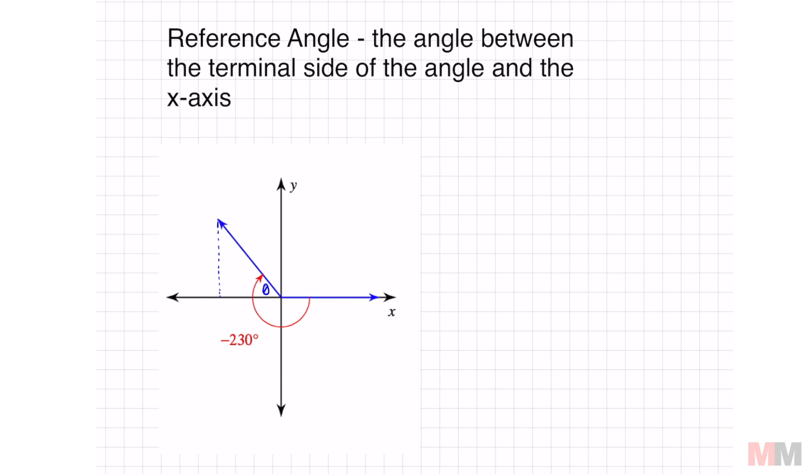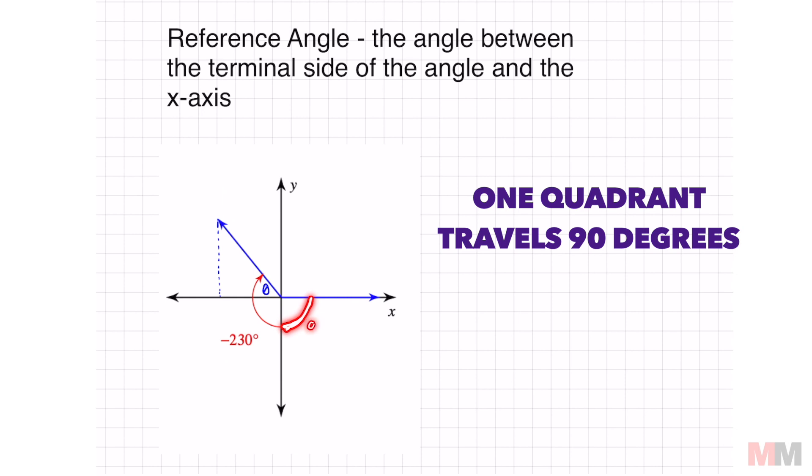Check it out. You start at 0, and traveling through one quadrant, this is quadrant 4, is 90 degrees. So far, this is 90, right?